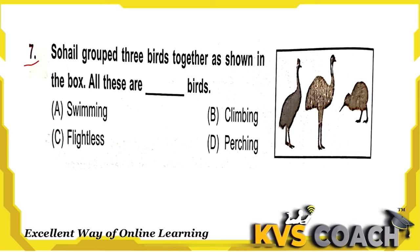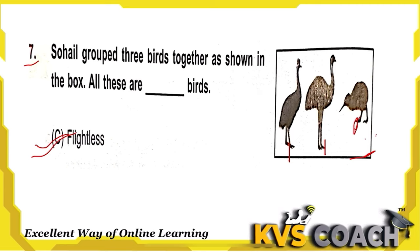Next question: Sohail grouped three birds together — cassowary, emu, and kiwi. All these are what kind of birds? They cannot fly — they are flightless birds. Option C is the right answer.